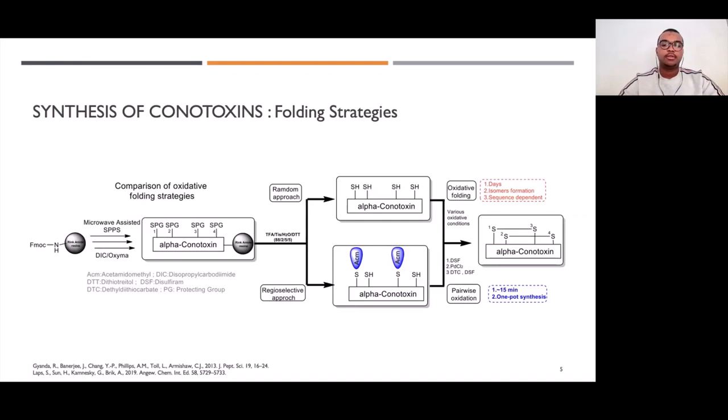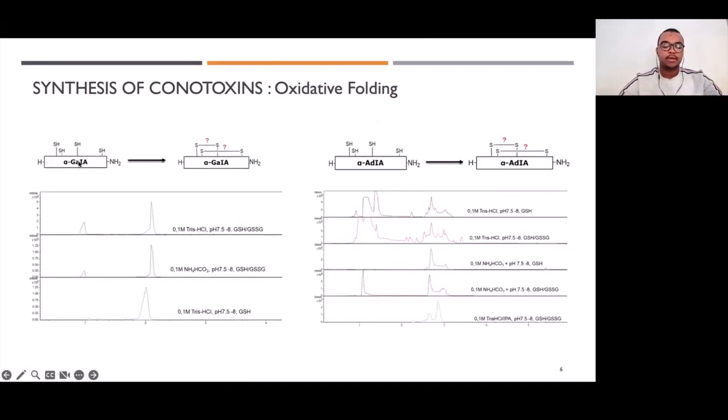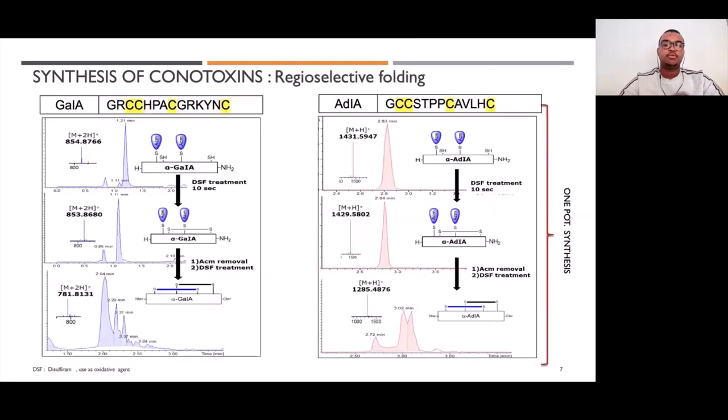So we started with oxidative folding sequencing on G1A. All the conditions we tested on G1A gave us one single isomer of conotoxin. But at this time, we cannot know if we have the right isomer. We did the same thing with AD1A, and we showed that for AD1A, it was very difficult to get one of the two disulfide bonds. We had to try various conditions to get at least two different isomers for AD1A. So at this time, we didn't know which one was the right isomer between these two. So we switched to the regioselective approach, which can lead to one single isomer.